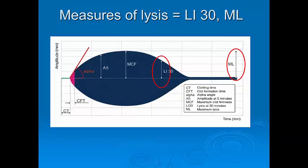Systemic hyperfibrinolysis is an increasingly recognized and relatively common condition in major hemorrhage. When present, this can be seen on a ROTEM trace as a decrease in the amplitude of the clot over time. This can be quantified by using a parameter called maximum lysis, or ML, which measures the percentage decrease in clot amplitude from its maximum value.